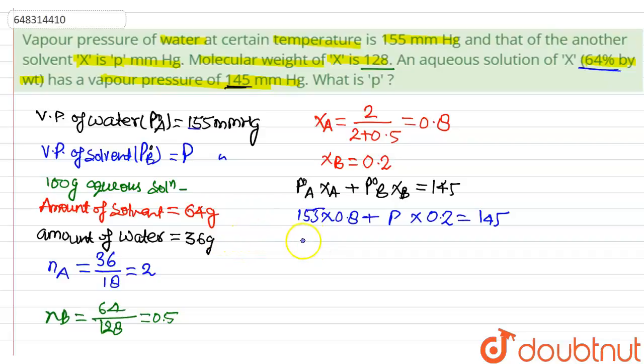By solving, 0.2P equals 145 minus 124, which equals 21. So P equals 21 divided by 0.2, and by solving, the value of P is 105 mmHg.